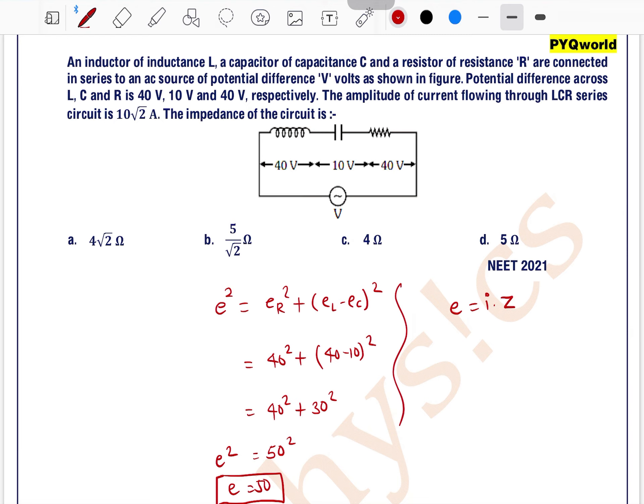We know E is equal to total current into total impedance. So, E is equal to 50, current is 10√2 and impedance is Z. So, Z is equal to 5 by √2 Ohm. The total impedance is equal to 5 by √2 Ohm. Option B is the correct one.